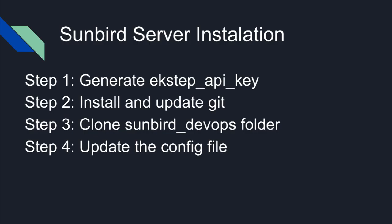The Sunbird server installation was the part we did over 26 times and succeeded only once. Initially, we generated the Xstep API key from the jwt.io website, then installed and updated Git, and cloned the Sunbird DevOps folder. We then updated the config file based on the information provided in the Sunbird server installation documentation.